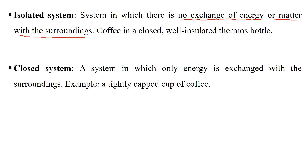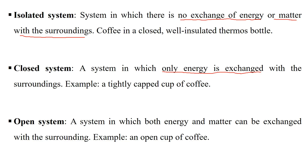A closed system is a system in which only energy is exchanged with the surrounding, but not matter. For example, if you put hot coffee in a covered cup, you will see that there is an exchange of heat with the surrounding. So energy is exchanged with the surrounding, but matter is not — that is the closed system.